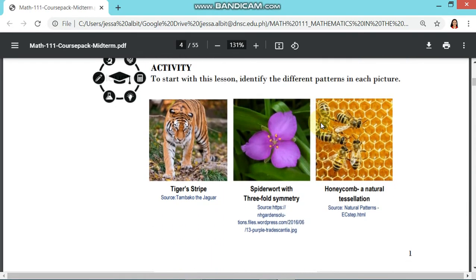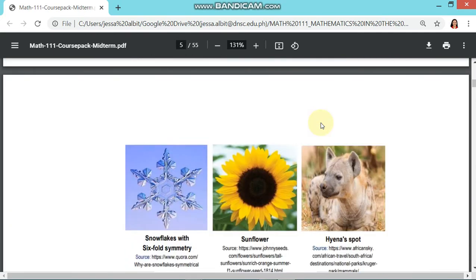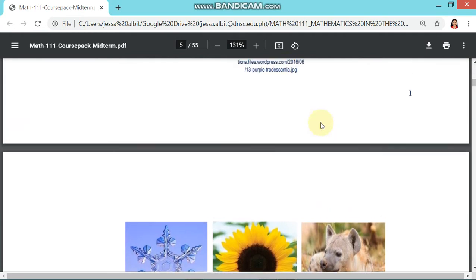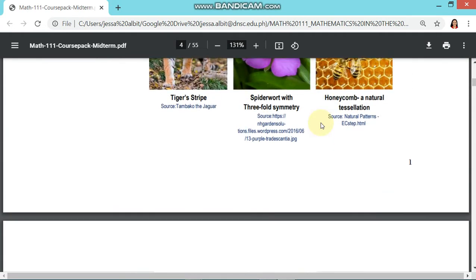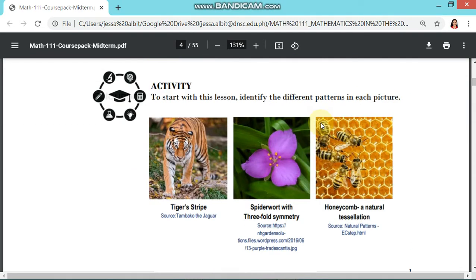We have the tiger stripe, the spiderwort with threefold symmetry, honeycomb as a natural tessellation, snowflakes with sixfold symmetry, sunflower, and hyena spot. So what is common in the pictures that I presented? They all follow a pattern. There is a certain pattern for each of the pictures.